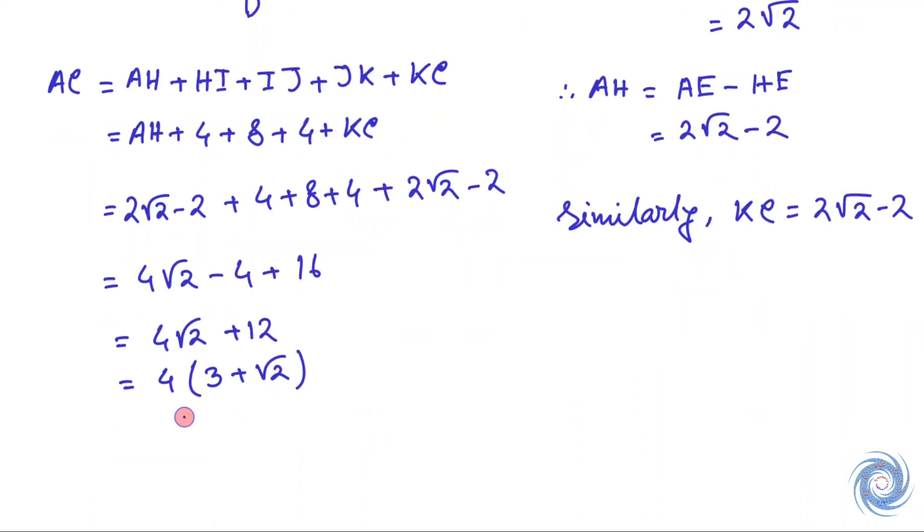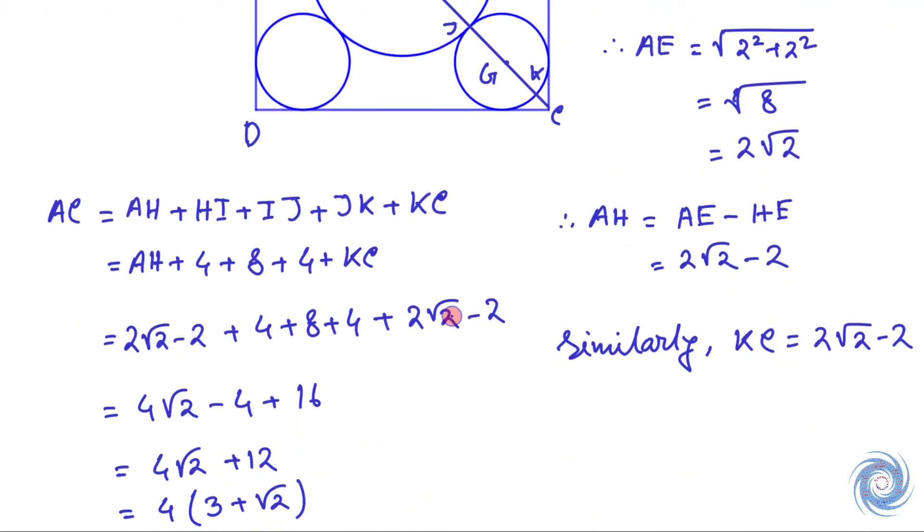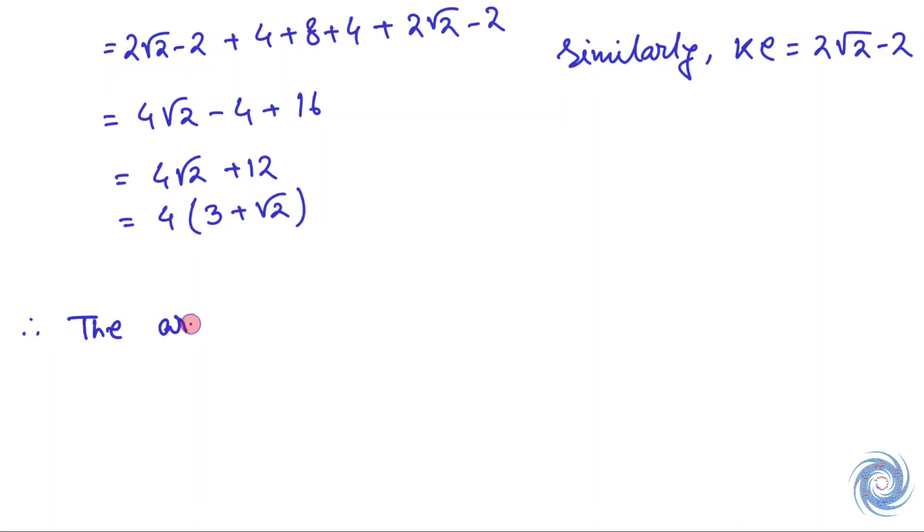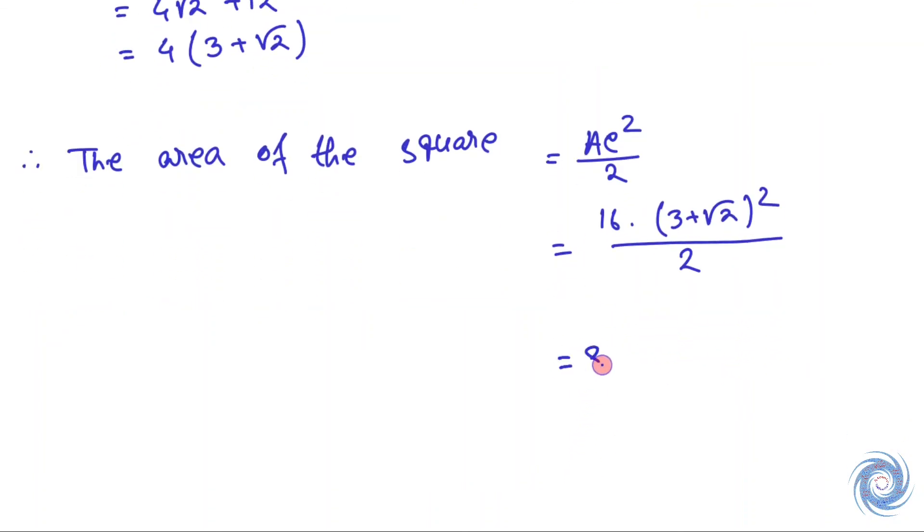The length of AC is 4(3 + √2). Now we can get the area of the square. The area of the square is given by AC squared divided by 2, and this gives 8(11 + 6√2) square centimeters.